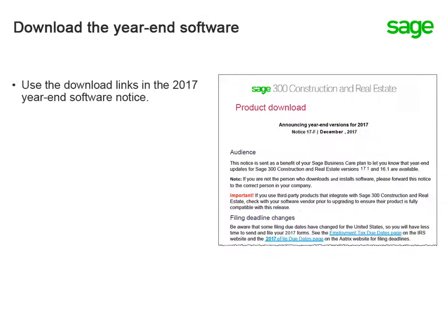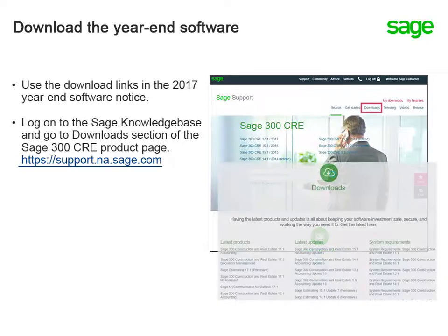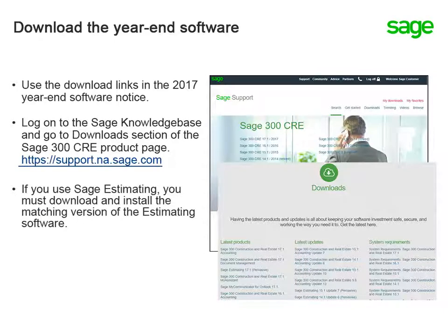You can download the year-end versions of the software through the 2017 year-end software notice or through the Sage Knowledge Base. After you log on, go to the Sage 300 CRE product page and go to the Downloads section. If you also use Sage Estimating, you must download the matching version of the estimating software and install it on those machines running both accounting and estimating.